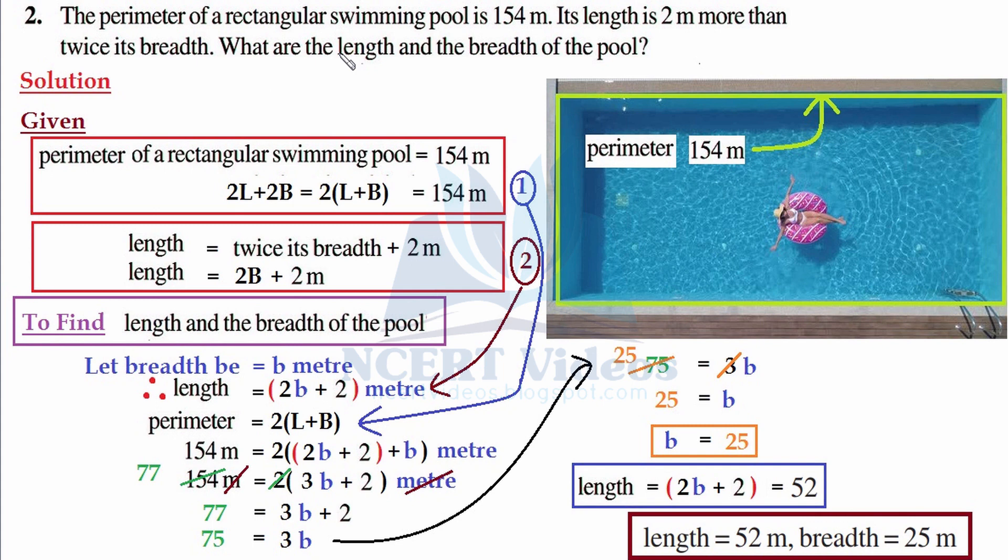in which you are swimming equals 154 meters. You're just writing whatever is given to you. We're not using any extra thoughts. So you know very well what is perimeter. It is twice of length plus twice of breadth.